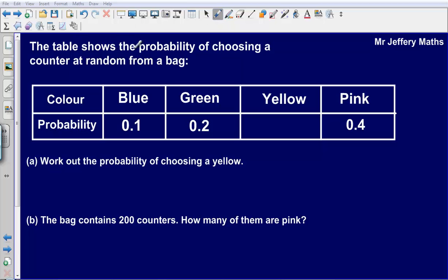The table shows the probability of choosing a counter at random from a bag. So here we've got our table. The different colored counters are blue, green, yellow and pink.